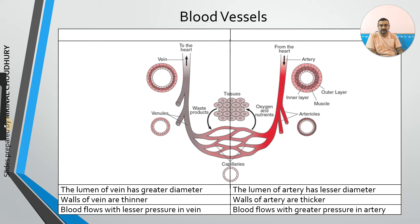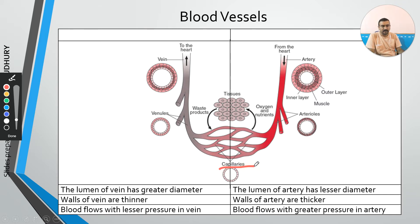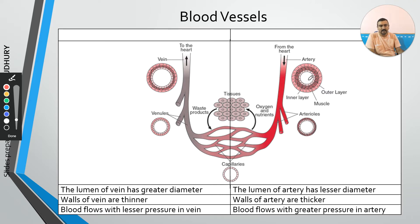Blood vessels are tubes present in the circulatory system. There are two basic types: veins, which carry blood from different body parts to the heart, and arteries, which carry blood from the heart to different body parts. Structurally, the wall of a vein is thinner compared to that of an artery, whose wall is thicker. As a result, the inner open area — called the lumen — is smaller in an artery but larger in a vein, which leads to higher blood pressure in arteries compared to veins.